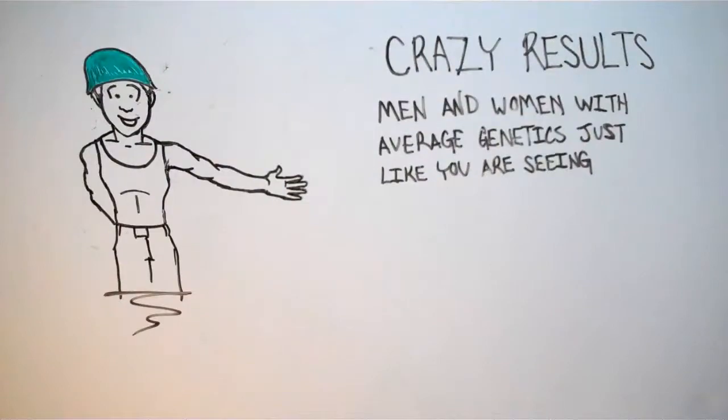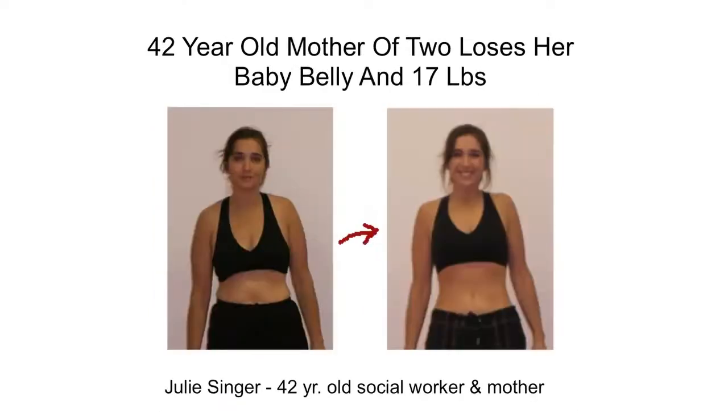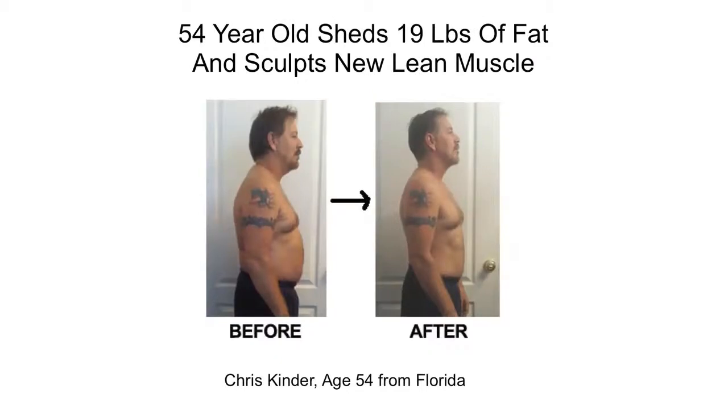Just take a look at the crazy results men and women with average genetics just like you are seeing with the 31 Day Fat Loss Cure. Chris Washington is a 44-year-old from Birkenhead, London. Chris lost 36.5 pounds in a few weeks just by following the nutrition secrets I reveal in the 31 Day Fat Loss Cure. Julie Singer, who I told you about earlier, got rid of her baby belly, lost 17 pounds of fat, and all this while raising two kids and working full-time as a social worker. Chris Kinder, a 54-year-old grandfather from Florida, ended up losing 19 pounds, got rid of his gut, and also said he looks and feels 10 years younger.